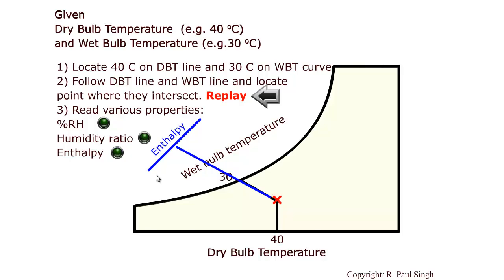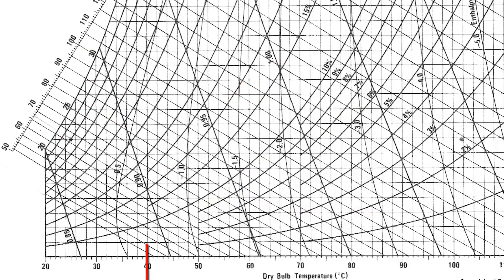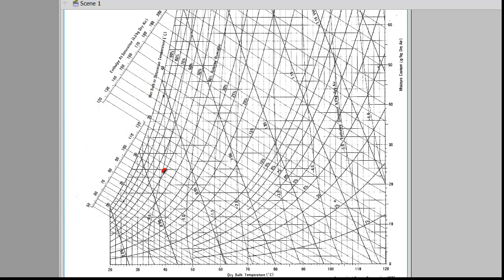On the psychrometric chart we follow the 40 degrees C dry bulb temperature line and see where it meets the 30 degrees C wet bulb line. That point where these two lines meet is the point where we find all the remaining properties. For relative humidity, we note that this point lies on the 50 percent relative humidity curve.